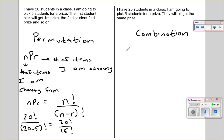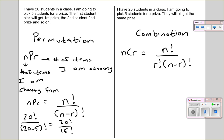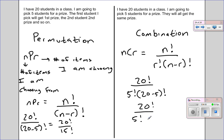For a combination, instead of NPR, it's NCR, where N is again the number of items I am choosing from, and R is the number of items I am choosing. The formula here is N factorial over R factorial times N minus R factorial. So the way this would be set up is 20 factorial over 5 factorial times 20 minus 5 factorial, which is 20 factorial over 5 factorial times 15 factorial. We'll solve that in a bit as well.